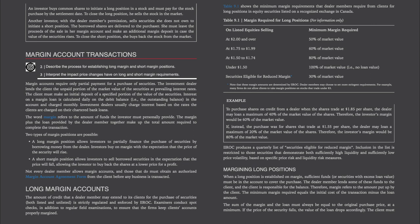Another investor, with the dealer member's permission, sells securities she does not own to initiate a short position. The borrowed shares are delivered to the purchaser. She must leave the proceeds of the sale in her margin account and make an additional margin deposit in case the value of the securities rise. To close the short position, she buys back the stock from the market.